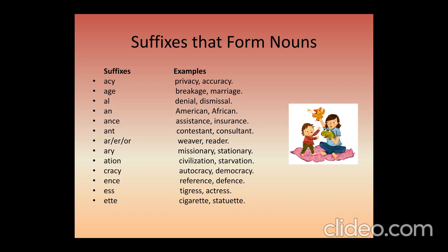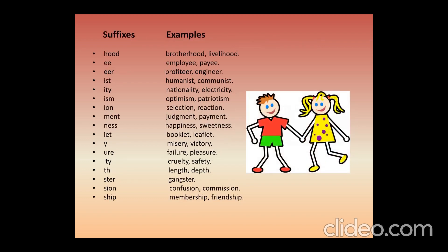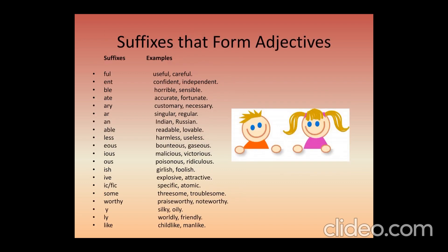'-acy': privacy, accuracy. '-age': breakage, marriage. '-al': denial, dismissal. '-an': American, African. '-ance': assistance, insurance. '-ess' creates the feminine gender: tiger → tigress, actor → actress. '-hood': brotherhood, livelihood. '-sion': confusion, commission. '-ship': member → membership, friend → friendship. '-ness': happy → happiness, sweet → sweetness.